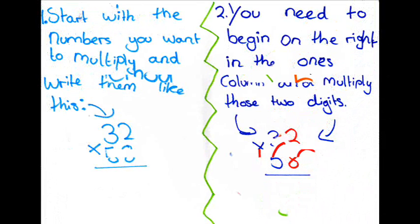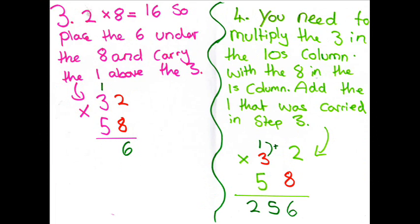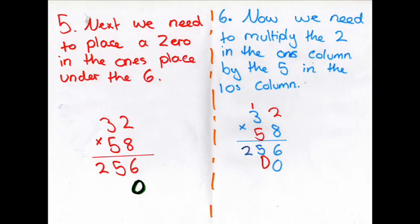All right. Here we go. 1 x 1 is 1. 2 x 1 is 2. 3 x 1 is 3. 4 x 1 is 4. 5 x 1 is 5. 6 x 1 is 6. 7 x 1 is 7.